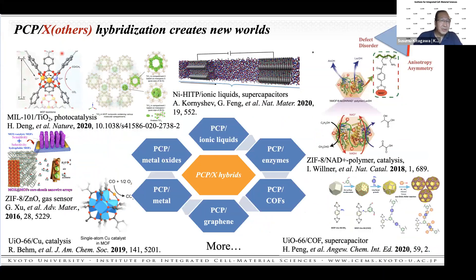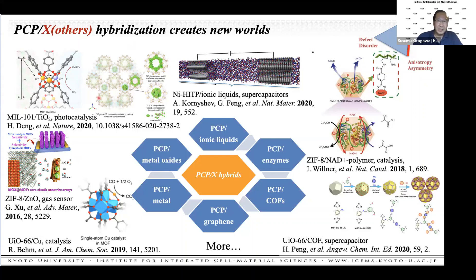In addition to polymer hybridization, metal oxide, graphene, enzyme, and liquid hybridization systems are also very promising. This kind of hybridization is completely very important for the future. The interface science is very important for the future in MOF/PCP chemistry.